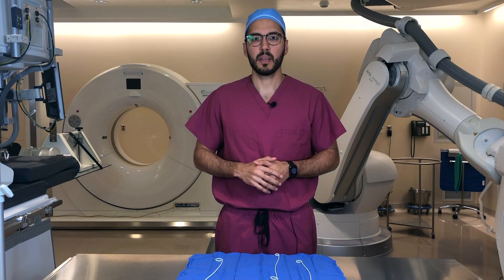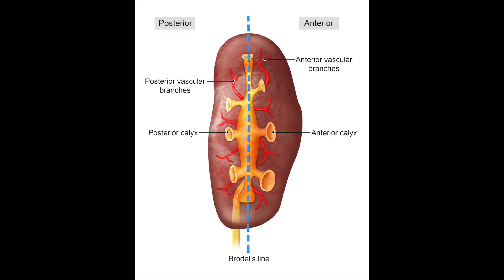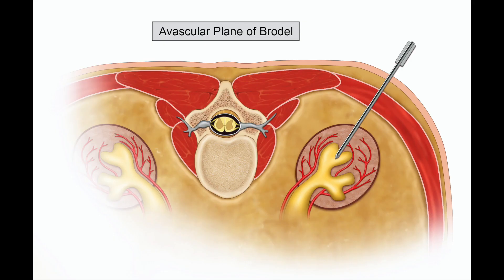When thinking about renal anatomy, you can divide the kidney into anterior and posterior segments. The renal artery and vein enter the kidney at the renal hilum and separate into the larger anterior branches and the smaller posterior branches. The same applies to the collecting system — you have anterior calyces and posterior calyces. In between the anterior and posterior vascular territories, you have a relatively avascular plane known as Brödel's line, which is along the posterolateral aspect of the kidney. Gaining access through this line theoretically decreases the risk of bleeding complications.